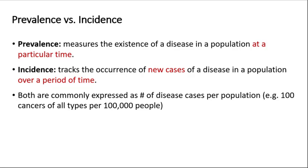Epidemiology quantifies the distributions and frequency of diseases across populations. Two common ways this is quantified are prevalence and incidence. Prevalence measures the disease frequency over a population at a particular time, while incidence tracks the occurrence of new cases of a disease over a period of time. Both prevalence and incidence are expressed as number of cases per unit population — for example, 100 cases per 100,000 people.